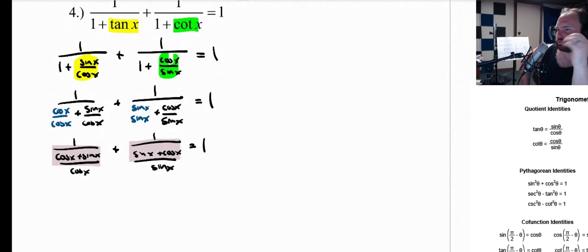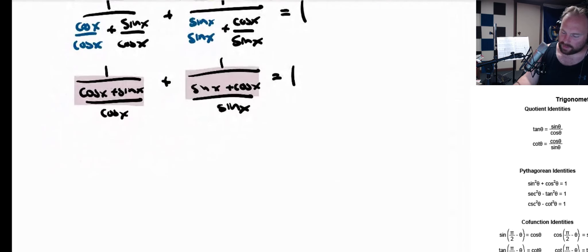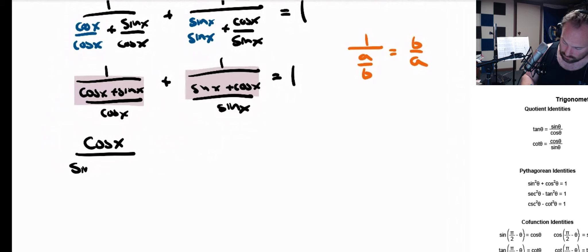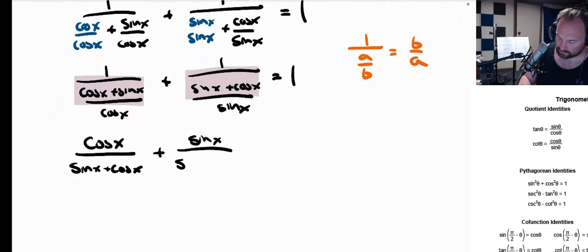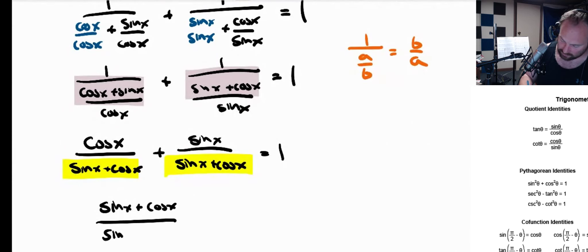We're almost there. What we're going to have is: 1 over cosine plus sine over cosine, plus 1 over sine plus cosine over sine. Both of these are fractions — 1 over something — and when you have 1 over (a over b), that equals b over a, you can just flip the fraction. So we flip them: cosine of x over (sine plus cosine), plus sine of x over (sine plus cosine). Now we can combine these because they have the same denominator, and we get sine of x plus cosine of x over sine of x plus cosine of x. That is, in fact, equal to 1. QED.